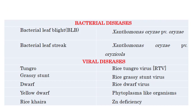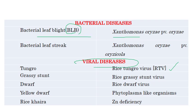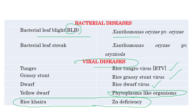The important bacterial diseases are Bacterial Leaf Blight (BLB) caused by Xanthomonas oryzae pathovar oryzae, and Bacterial Leaf Streak caused by Xanthomonas oryzae pathovar oryzicola. The viral diseases include Rice Tungro caused by Rice Tungro Virus; Grassy Stunt caused by Rice Grassy Stunt Virus; Dwarf caused by Rice Dwarf Virus; and Ufra which is a phytoplasmal disease. Rice Khaira, caused by zinc deficiency, is an important abiotic disease.